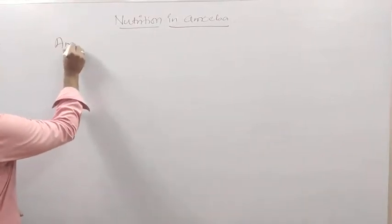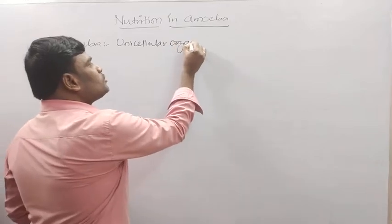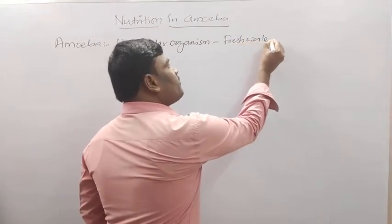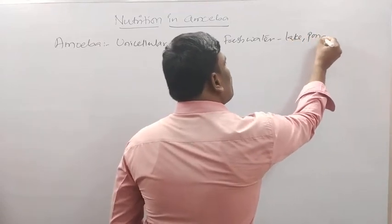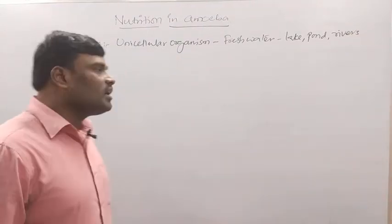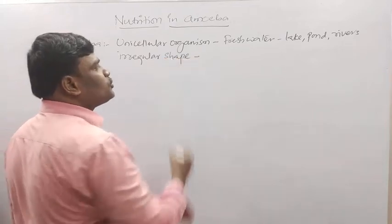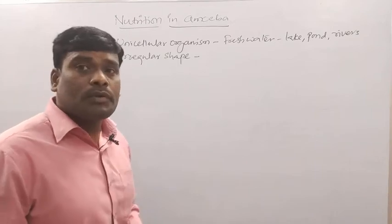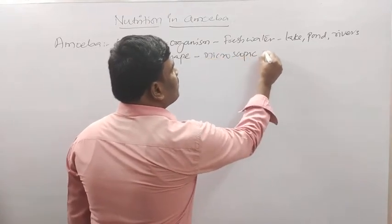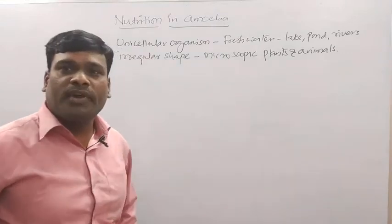Amoeba is a unicellular organism. It is found in fresh water such as lakes, ponds, and even in rivers. If you observe the shape and structure of amoeba, it is irregular in shape — it doesn't have any regular shape. It feeds on microscopic plants and animals.